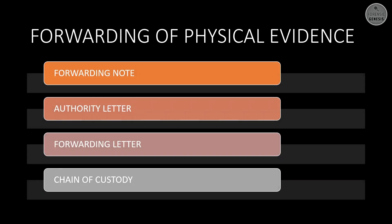Forwarding of physical evidences involves a forwarding note, authority letter, forwarding letter, and chain of custody. The forwarding note is attached with each evidence giving complete information in short, like the FIR number, case number, type of evidence, police station name, IO name, etc. The authority letter is given by an IO to the director of FSL, giving the lab authority to open the envelope and analyze the evidence. The forwarding letter is given with a whole lot of evidence — for example, if the IO found seven pieces of evidence at a single scene of crime, the forwarding letter describes all the evidence and the questions to be answered in the analysis. Chain of custody is maintained by both the IO and the FSL.